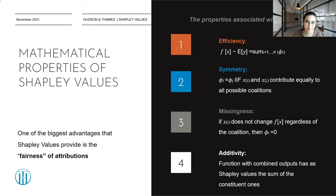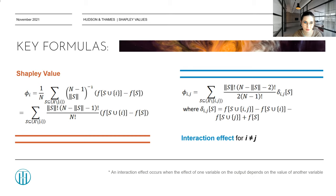Talking about the mathematical properties, we cannot avoid looking at the mathematical formulas for the Shapley values and for the interaction effect. The interaction effect is another metric that can be calculated — it measures the effect one variable has on another variable. For every i not equal to j, we can calculate an interaction effect between two features. In combination with Shapley values, it provides a lot of intel for us as researchers.